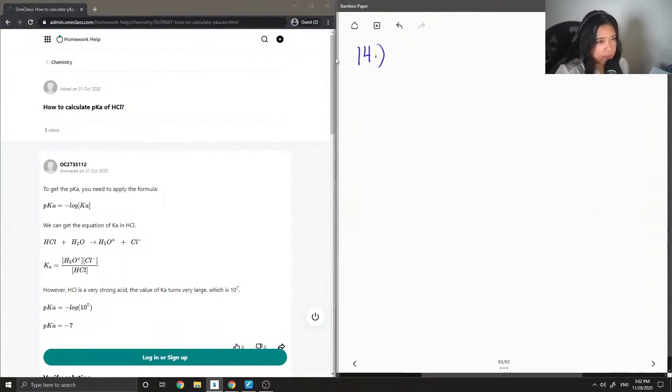Okay, so first I'm just going to write down HCl when it is dissolved in water. It forms H3O plus plus a chlorine ion.